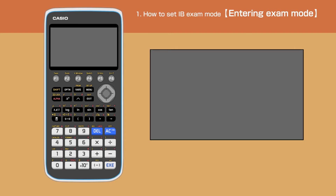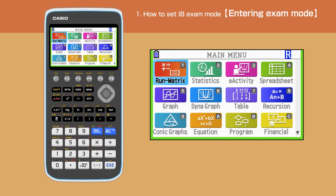The calculator will switch off for a short while, then we will have the main menu back on the screen. Under the exam mode, the R icon will flash on the top right corner with green lines framing the display.